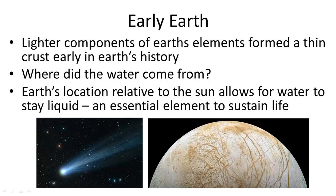The Earth didn't always have water. Originally it was just a solid mass, and water came from comets that pelted the Earth for millions of years. Comets are made of ice, which melted on impact and formed bodies of water. The accumulation of countless comets led to the formation of the oceans, made possible by Earth's position relative to the sun, which allowed that water to remain liquid.